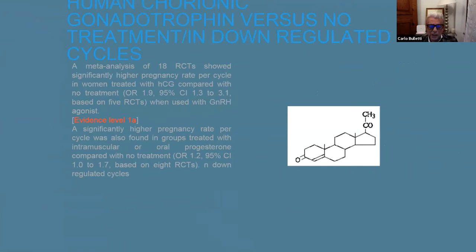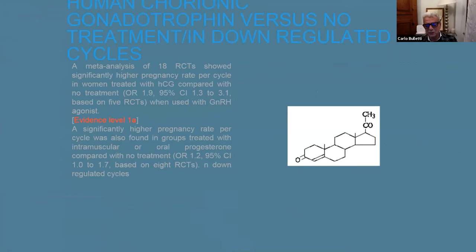When we use hCG versus no treatment in downregulated cycles, we can see that there is a significant increase in pregnancy by using the support of luteal phase with progesterone or with hCG, with an evidence level of 1A.